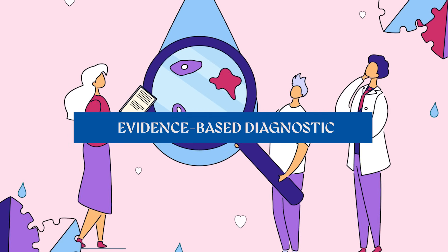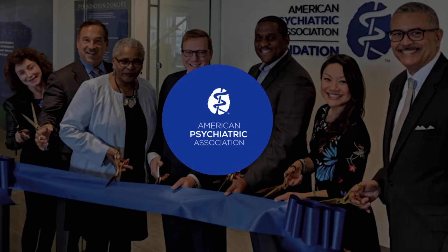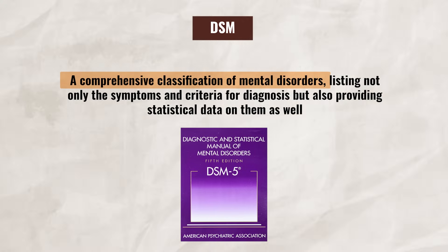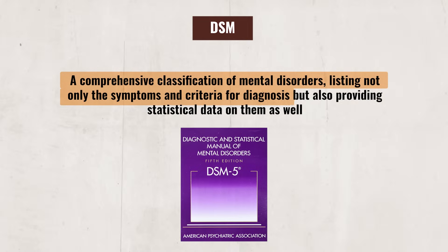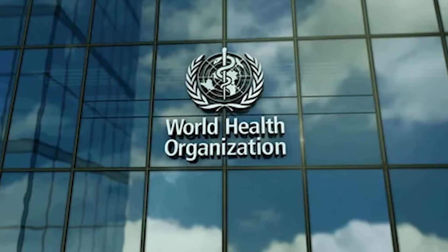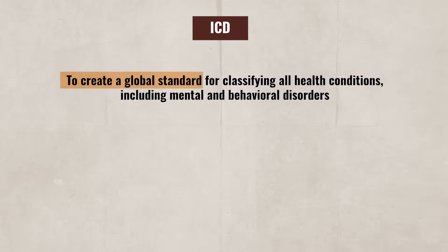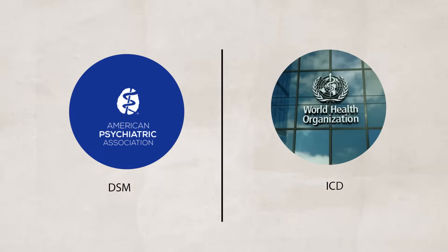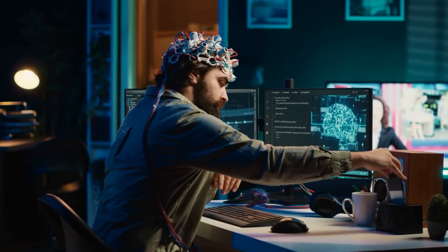When it comes to diagnosing psychological disorders, it is important that only trained psychologists, psychiatrists, and other mental health specialists that rely on evidence-based methods should diagnose and treat individuals. Trained professionals reference either the DSM or ICD. The DSM was developed by the American Psychiatric Association (APA), and its purpose is to provide a comprehensive classification of mental disorders, listing symptoms, criteria for diagnosis, and statistical data. The ICD was developed by the World Health Organization to create a global standard for classifying all health conditions, including mental and behavioral disorders. Both the DSM and ICD are regularly updated as new discoveries about mental health conditions are made and as social norms evolve.